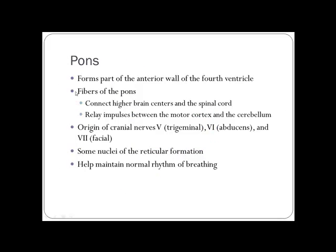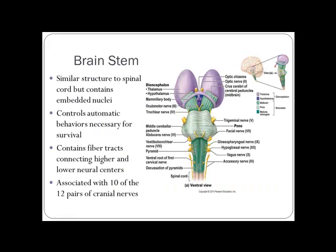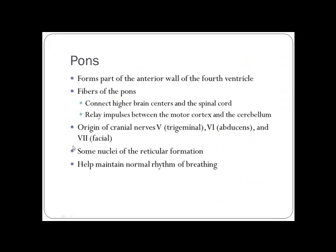The pons forms the anterior wall of the fourth ventricle. Its fibers connect to higher brain functions. The cranial nerves arising from the pons are the trigeminal (V), abducens (VI), and facial (VII). A key function of the pons is helping maintain the normal rhythm of breathing — a region called the pneumotaxic center.